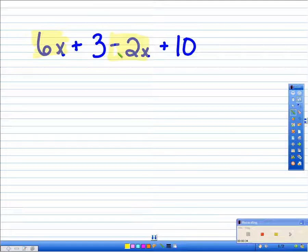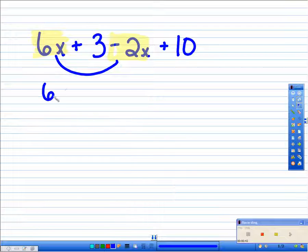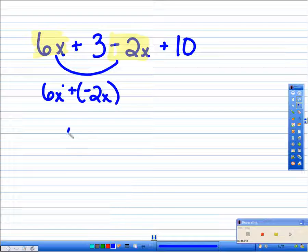But we're going to put the negative sign with it, and we're going to combine them. So what we really have is 6x plus negative 2x, and that's going to be 4x.